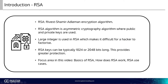RSA stands for Rivest Shamir Adelman, which are the three people that came together to invent it. It's an asymmetric encryption algorithm where public and private keys are used to encrypt the data. With asymmetric encryption, it uses a key pair that is mathematically linked to encrypt and decrypt, called the public and private key. The public key is accessible to anyone, but the private key is a secret only known by the key pair creators. With RSA, either the public or private key can encrypt the data, but only the other key can decrypt it. This is one of the reasons why RSA is the most used asymmetric encryption algorithm.